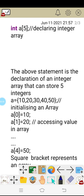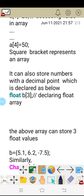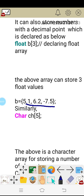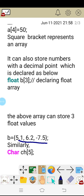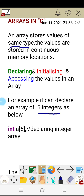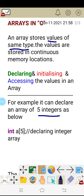In the first example, all the integer values are stored. In the next example, all the float values are stored — 5.1, 6.2, minus 7.5 — all the decimal pointed values. In the third example, all the characters are stored. So an array stores values of the same type: either all integers, all decimal values, or all characters.